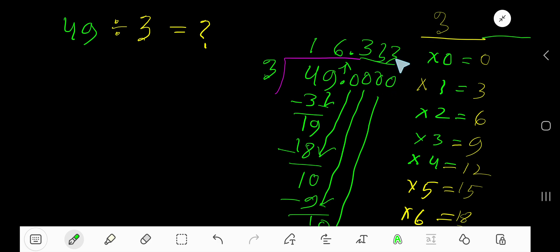As we have gotten 3 places after decimal, now we can place 3 dot here. So, this is the answer. You can place here bar, because this 3 is repeating.